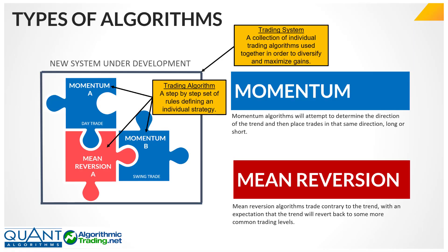Before I jump into this topic, I want to distinguish between two terms I'll use often. A trading algorithm is a step-by-step set of rules defining an individual strategy. A trading system is a collection of these trading algorithms used together in order to diversify and maximize gains.